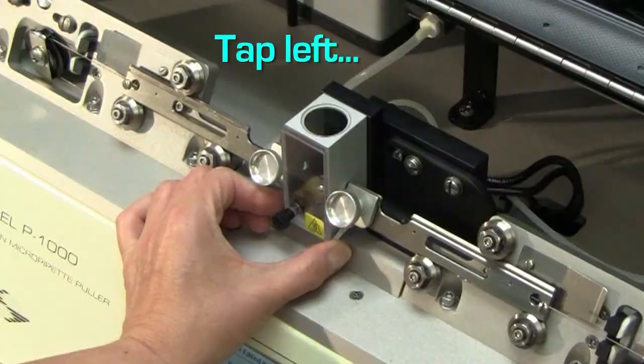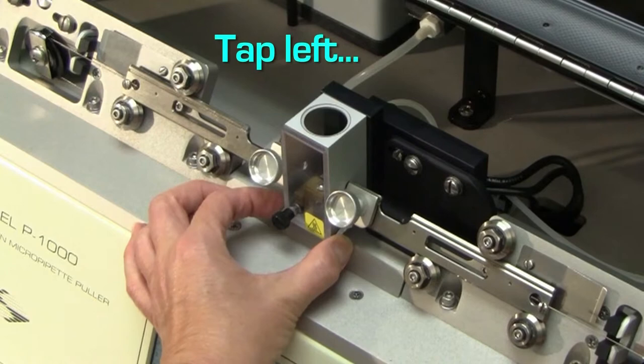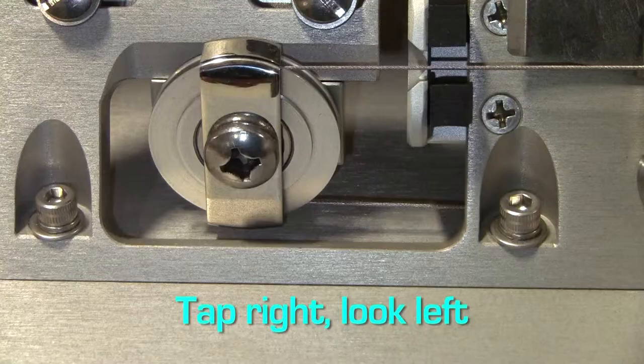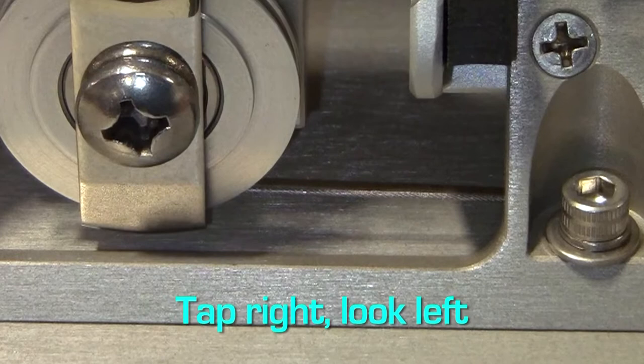Pull the puller bars all the way together. Now tap one puller bar against the hard stop and watch the lower portion of the pull cable on the other side. You should see movement that corresponds to your tapping. Reverse sides and repeat. If you see the movement to about the same extent on both sides, you're good.